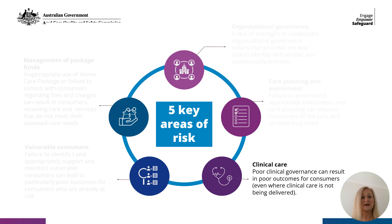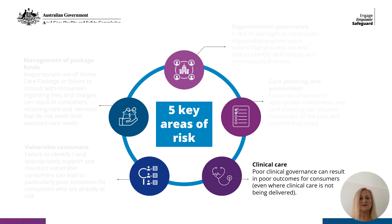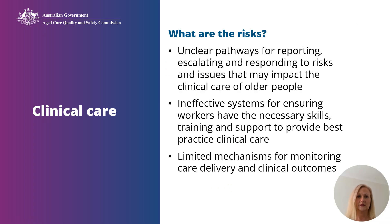The third key risk area is clinical care. The Commission has found some home service providers do not have a robust clinical governance framework that enables them to provide best practice clinical care. Poor clinical governance can result in poor outcomes for older people even where clinical care is not being delivered. Some providers who do not provide clinical care fail to appropriately consider clinical matters which should inform the delivery of care and services and identify risks to consumers. The fundamental problems are a lack of clinical governance policies, procedures and validated systems, and an inability to proactively address related problems.